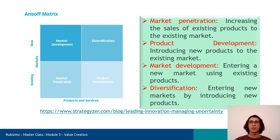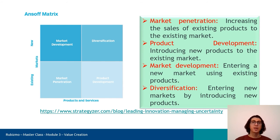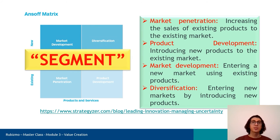The first strategy is market penetration: increasing the sales of existing products to the existing market. The next is product development: introducing new products to the existing market. The third is market development: entering a new market using existing products. The last is diversification: entering new markets by introducing new products. This matrix allows companies to choose the best possible combination based on the product and market situation. The job is to find which combination of products and customers is likely to bring the best revenue to the company, and the term segment falls out as a result of such an exercise.